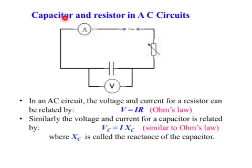Capacitor and Resistor in AC Circuits. In an AC circuit, the voltage and current for a resistor can be related to each other by this well-known Ohm's law, V equal to IR.